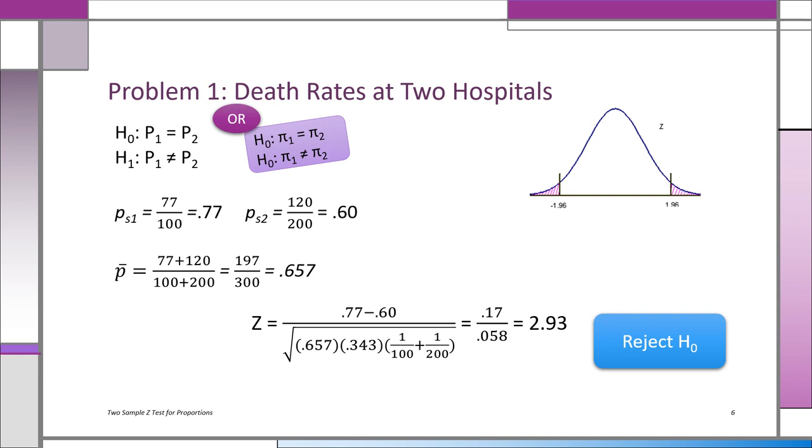Now when we need that p bar, that's that pooled proportion. Remember, under the H0 there's no difference, so we're playing devil's advocate with the straw man and saying okay, under H0 we can combine it. So we combine the two to get that p bar: 77 plus 120 divided by 100 plus 200, 300 people. 197 over 300 is 0.657.